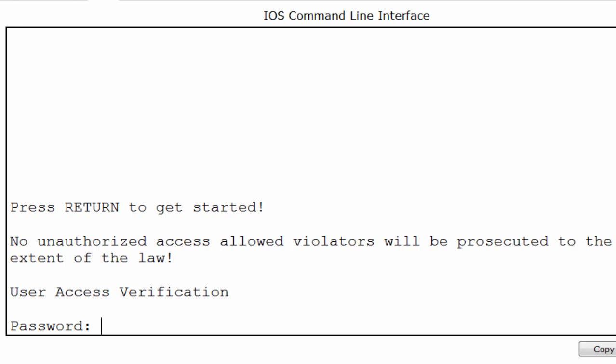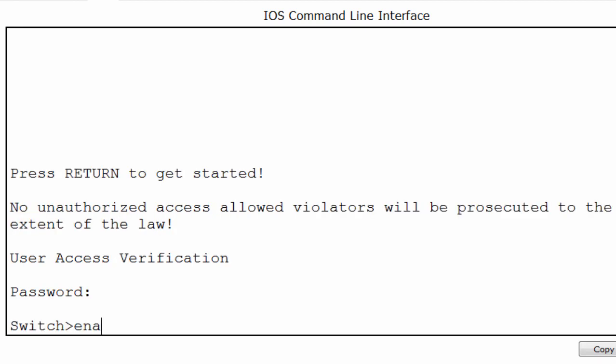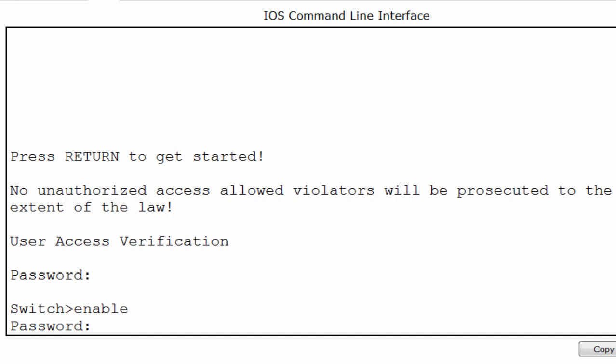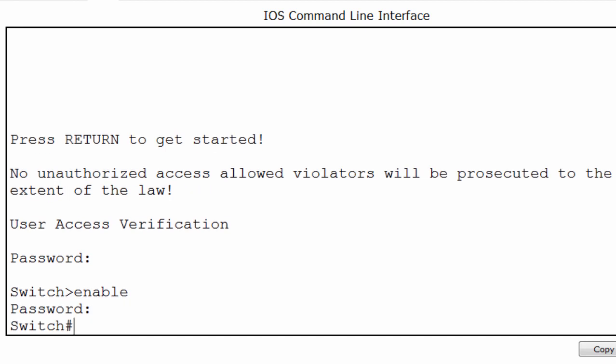After you've begun some initial configurations on your switch, you'll want to know how to save your configuration. You can see that I'm using Packet Tracer and I have a command line interface to the switch. Notice the banner message and that I'm being prompted for a password. I'll put in the password Cisco, then type enable password class to get to privileged exec mode.